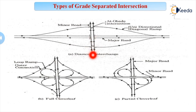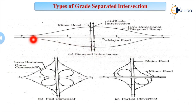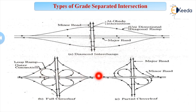For example, if I am arriving from one direction and want to go straight, I can go straight. If I want to go leftwards, I can take this loop or ramp and go left. If I want to move towards the right side, I can take this loop and move right. If I want to move straight, I can go straight. So these are the diamond intersection and full cloverleaf intersection — much simpler but a complicated type of intersection.